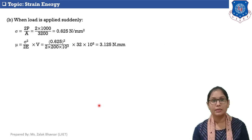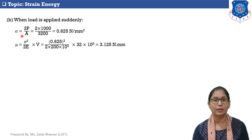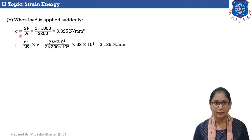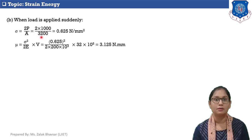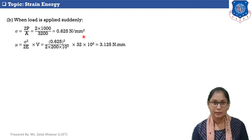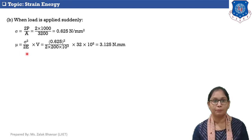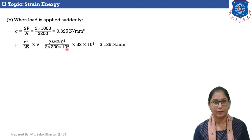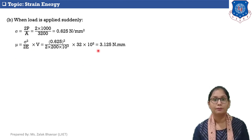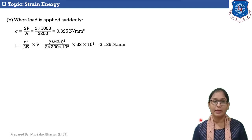Case 2 — load applied suddenly: sigma = 2P/A = 2×1000/3200 = 0.625 N/mm². Strain energy mu = sigma²/(2E) × V = 0.625² / (2×200×10³) × (32×10⁵) = 3.125 N·mm. This is the end of the session. In the next session we will calculate strain energy due to impact type of loading and solve a few numericals.